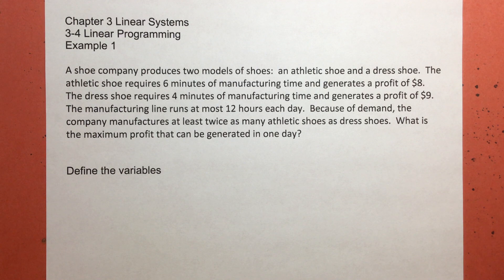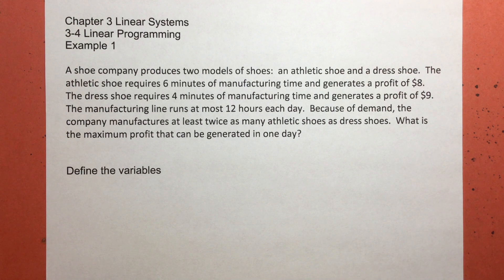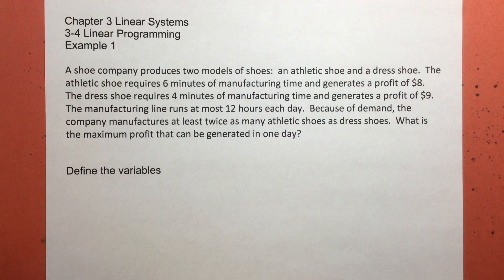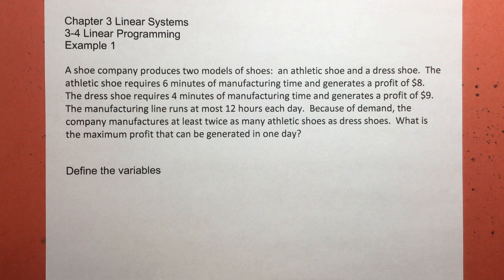So a shoe company produces two different types of shoes — an athletic shoe and a dress shoe. I'm going to be making comments as I read it. Most companies are going to produce more than two types of different things, so this company decides that they're only going to produce two types of shoes. Probably some sort of sneaker or cross-training shoe, and something you're going to wear when you dress up — maybe a wingtip.